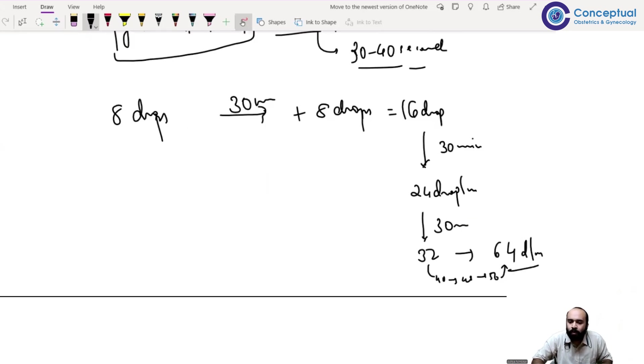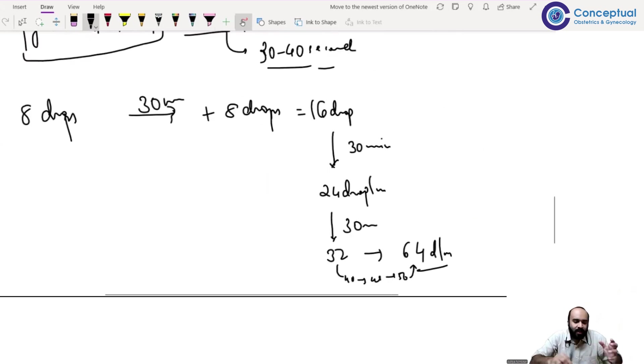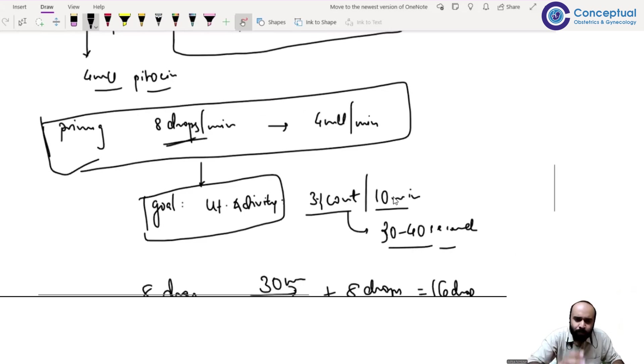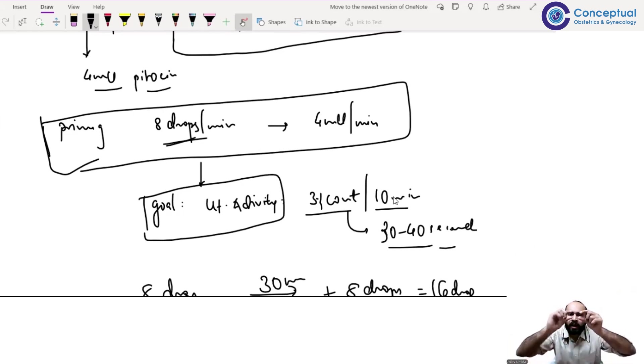We usually go up to 64 drops per minute maximum. If there's no uterine activity, we say she has non-progressive labor and take her for cesarean section. Few institutes go to 128 drops, but we don't prefer waiting that long. Did everyone understand how to titrate these doses? Very simple calculation and explanation. You don't need to remember the calculation. All you need to remember is: take 500 ml RL pouch, add 5 units - that's 0.5 ml oxytocin. Then adjust to 8 drops per minute. Every 30 minutes reassess her uterine activity. If inadequate, increase from 8 to 16, 16 to 24. That's it - you don't need to know the calculation. The calculation was only for your understanding of how the chart works.